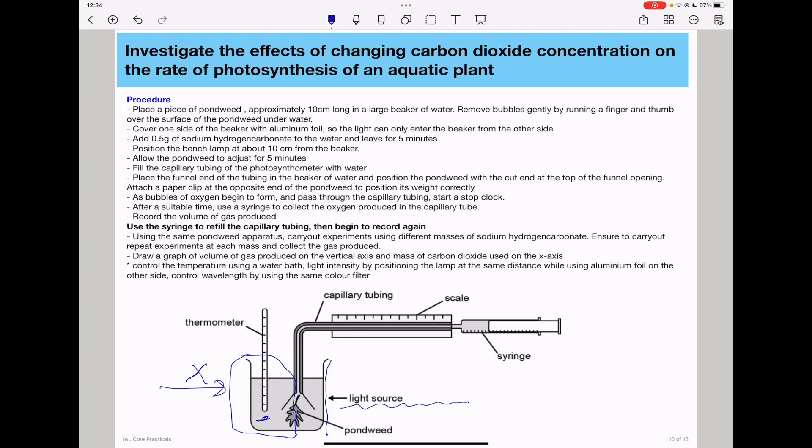Make sure the light intensity is constant by positioning the light source at a specific non-changing distance from the experimental setup. Using the same color filter ensures that the wavelength does not change.